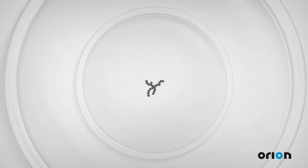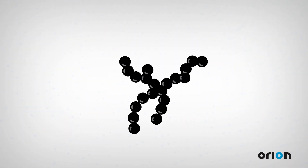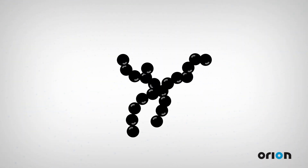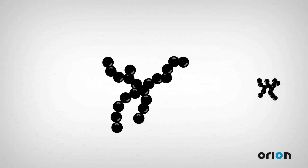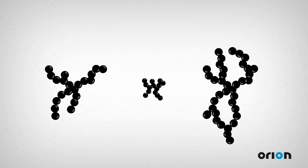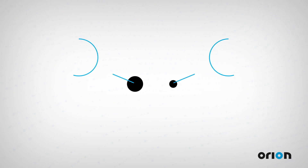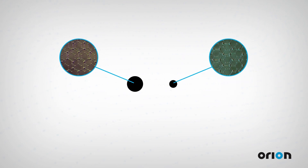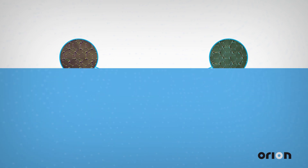Under a microscope, carbon black looks like a cluster of grapes, with some types having smaller grapes or particles, and other types having a bigger cluster of fruit, or a high structure.